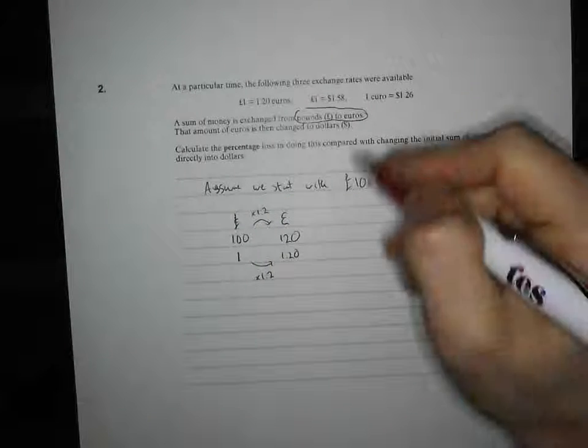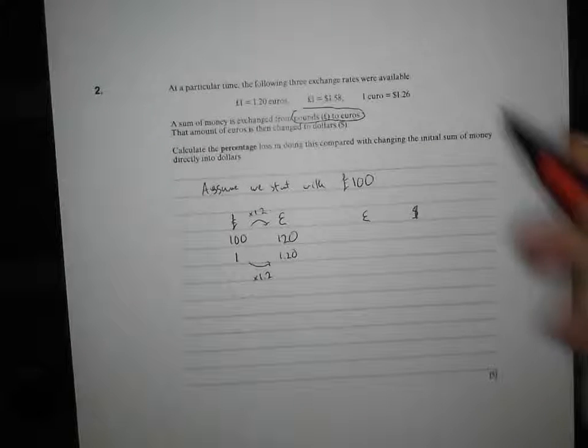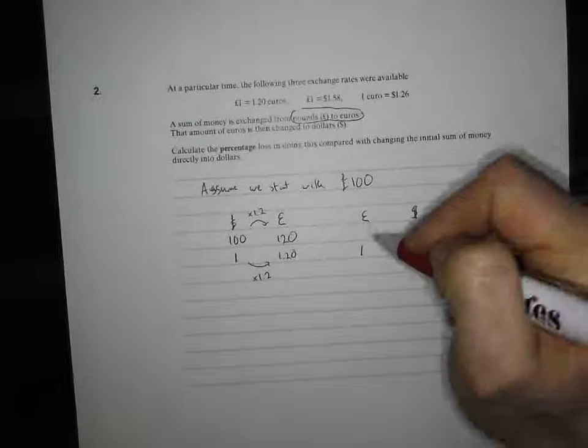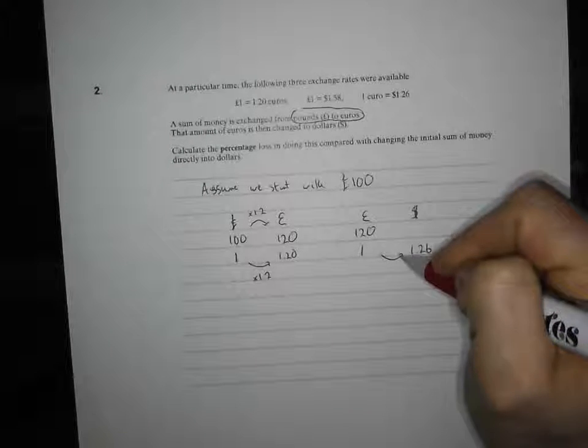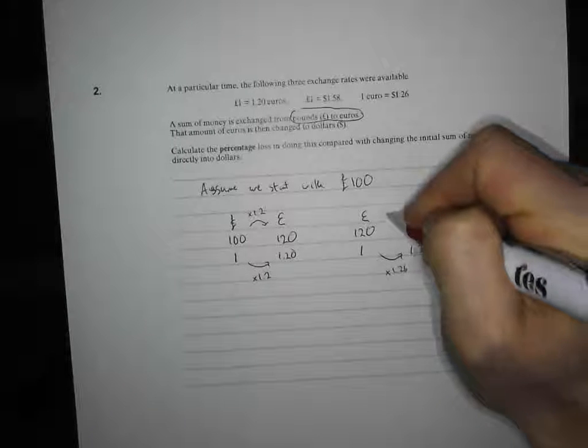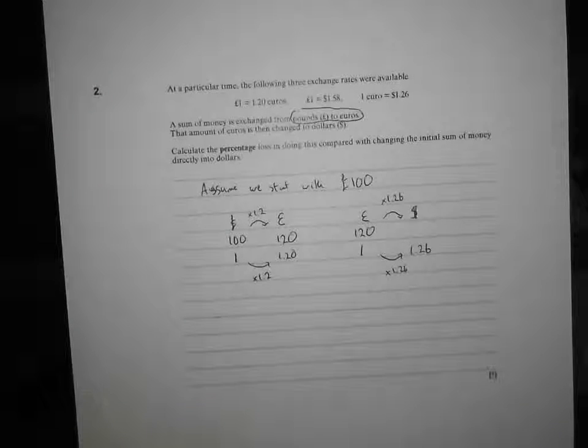We've then got euros, and we're going to change that to dollars. So, we've got our euros here, and we're going to change to dollars. Now, we know that one euro is 1.26 dollars, but we've got 120 euro. So, again, to get from our euro to a dollar, we're going to times by 1.26. So, to get from 120 euros to our amount of dollars, we're going to times by 1.26 as well.